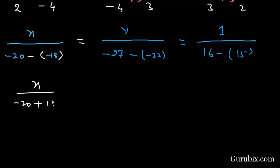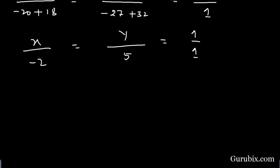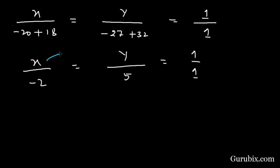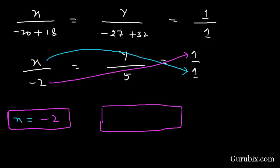Further solving: x / (-20 + 18) = y / (-27 + 32) = 1 / (16 - 15), which gives x / (-2) = y / 5 = 1 / 1. Therefore x = -2 and y = 5. We observe that the solution from both methods is the same. This is the solution of the question. Thank you.